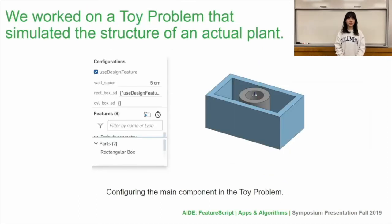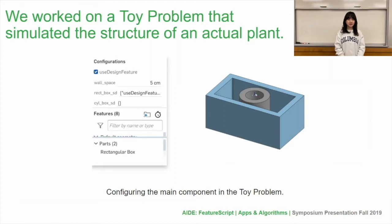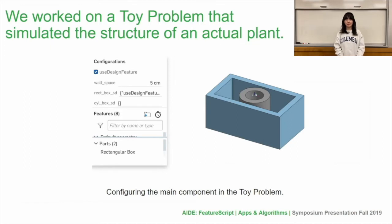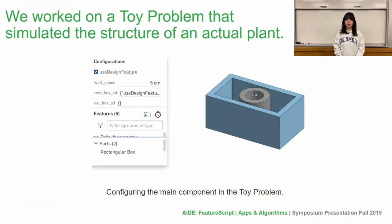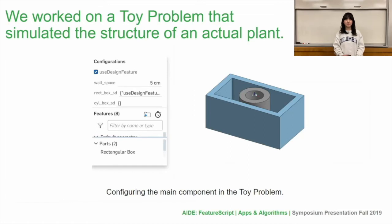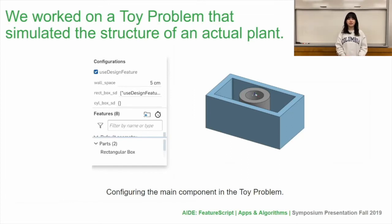We worked on a toy problem that assimilates the structure of an actual plant. This is a screenshot of what we've built for the toy problem. The toy problem is meant to simulate very basic examples of what the overall features to code for the entire plant would look like. We worked through it to test out different methods of writing features, starting from creating a bin design feature in which we wrote FeatureScript code to design single components.